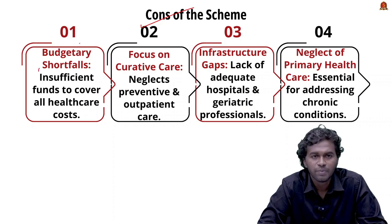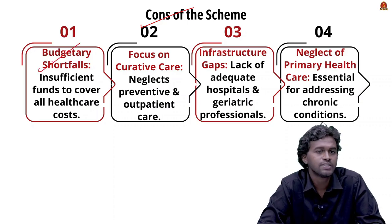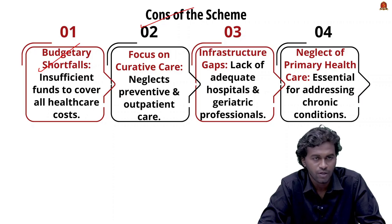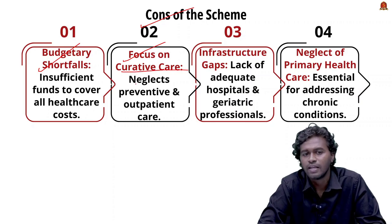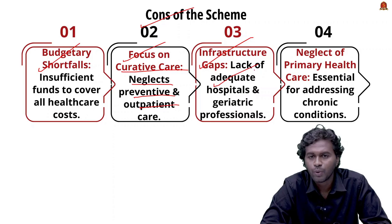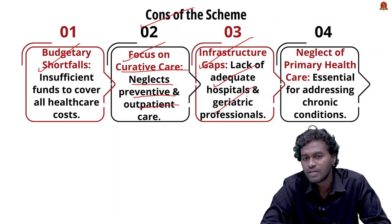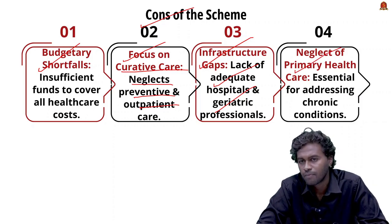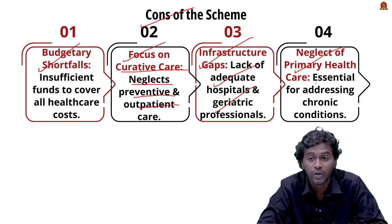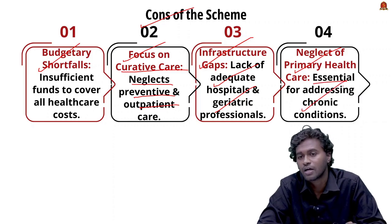Now for the limitations: the first is budgetary shortfall — even though it provides ₹5 lakh coverage, this may not be sufficient in certain cases due to increasing healthcare costs. The second limitation is focus on curative care, neglecting preventive and outpatient care which are essential for healthy aging. The third limitation is infrastructure gap — lack of adequate hospitals and trained geriatric professionals. The fourth is neglect of primary healthcare, which is essential for addressing chronic diseases.